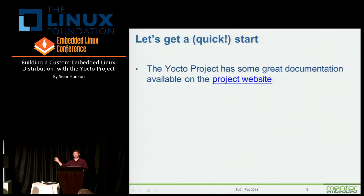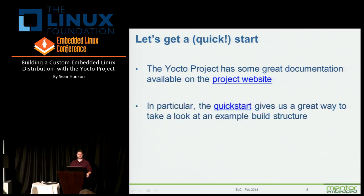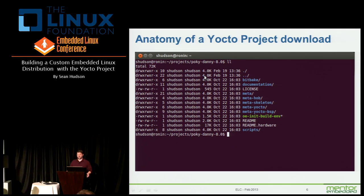So the quick start — the Yocto Project has great documentation. My template was to take the quick start guide, which is very much a recipe — follow these instructions and you'll end up with something — and pull it apart a little bit to use as a framework to explain the pieces of the Yocto Project. This is what your initial download will look like. If you can tell from the name of the directory, this is Danny 8.0.